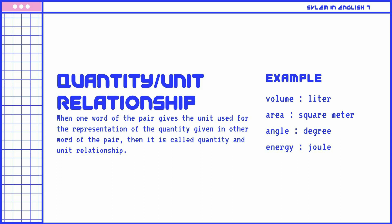Quantity-unit relationship: When one word of the pair gives the unit used for the representation of the quantity given in the other word of the pair, then it is called a quantity-and-unit relationship. Examples: Volume is to liter. Area is to square meter. Angle is to degree. Energy is to joule.